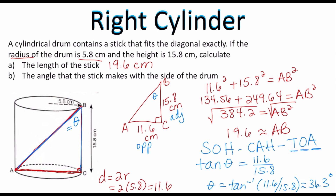Theta is approximately 36.3 degrees. So this angle is approximately 36.3 degrees. If I wanted the other missing angle I can subtract: 180 minus 90 minus 36.3 gives the bottom angle as 53.7 degrees. The answer to the question — the angle the stick makes with the side of the drum — is 36.3 degrees.